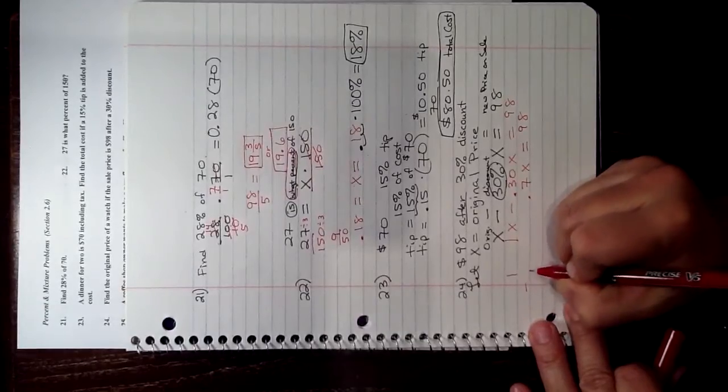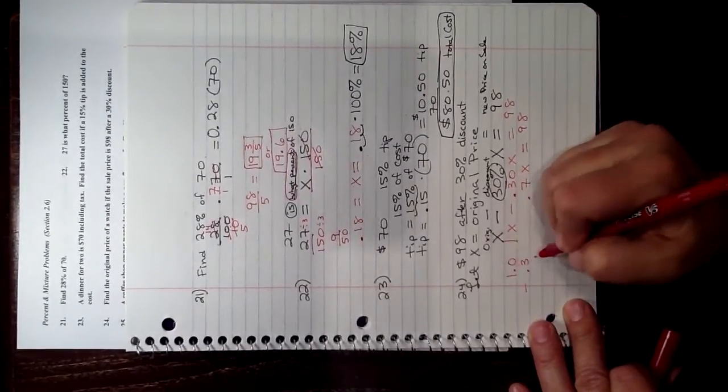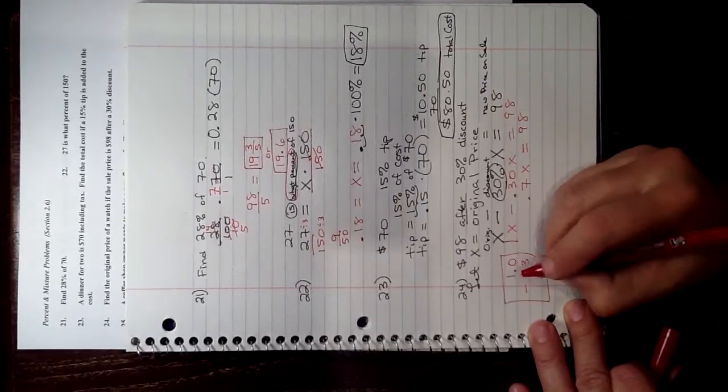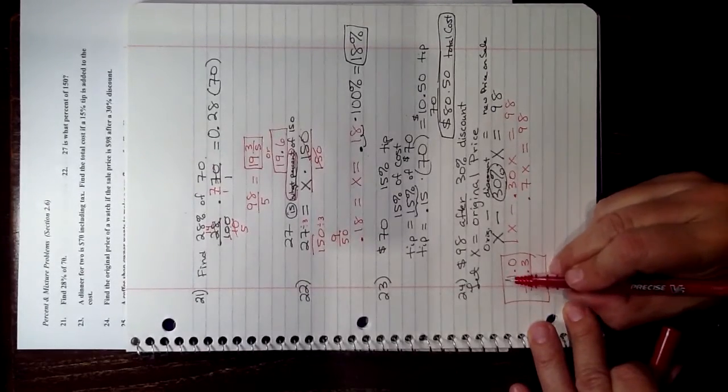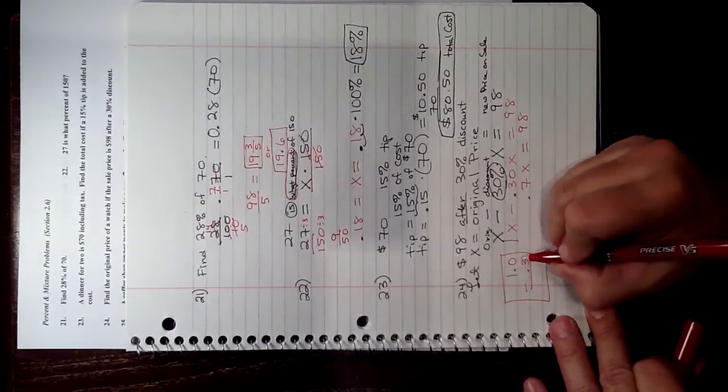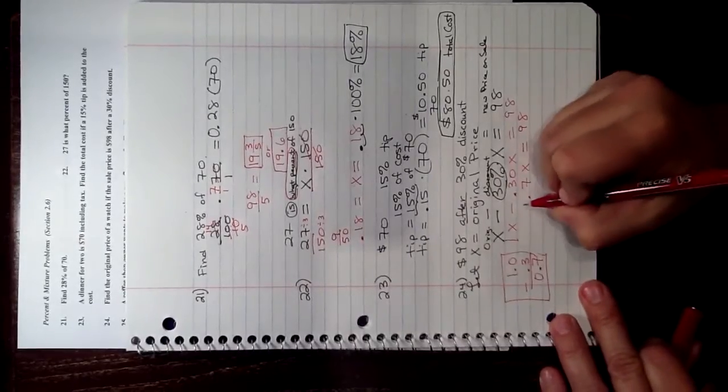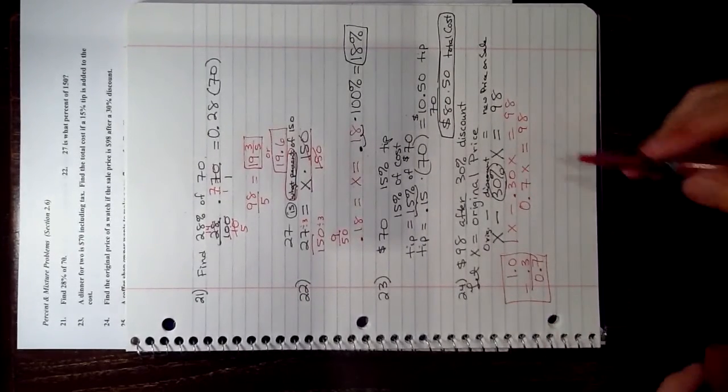So 1 minus 0.3, so 1 has a point at the end of the 1, and you can put a 0, 0 minus 0.3 is 0.7. So 0.7X is 98.